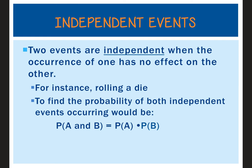Independent and dependent events are like with replacement and without replacement. Two events are independent if one has no effect on the other — for instance, rolling a die every time is independent, like starting over with a brand new die each roll. For an 'and' statement involving two independent events, you multiply their individual probabilities: P(A and B) = P(A) × P(B). Note: 'or' is one event and we add; 'and' is two events and we multiply.